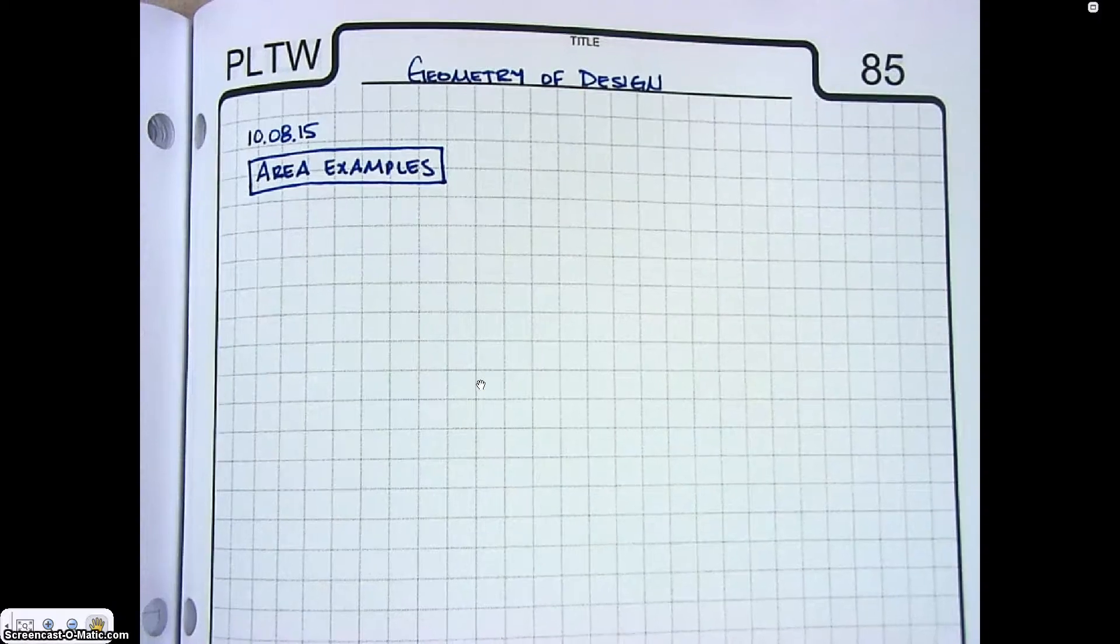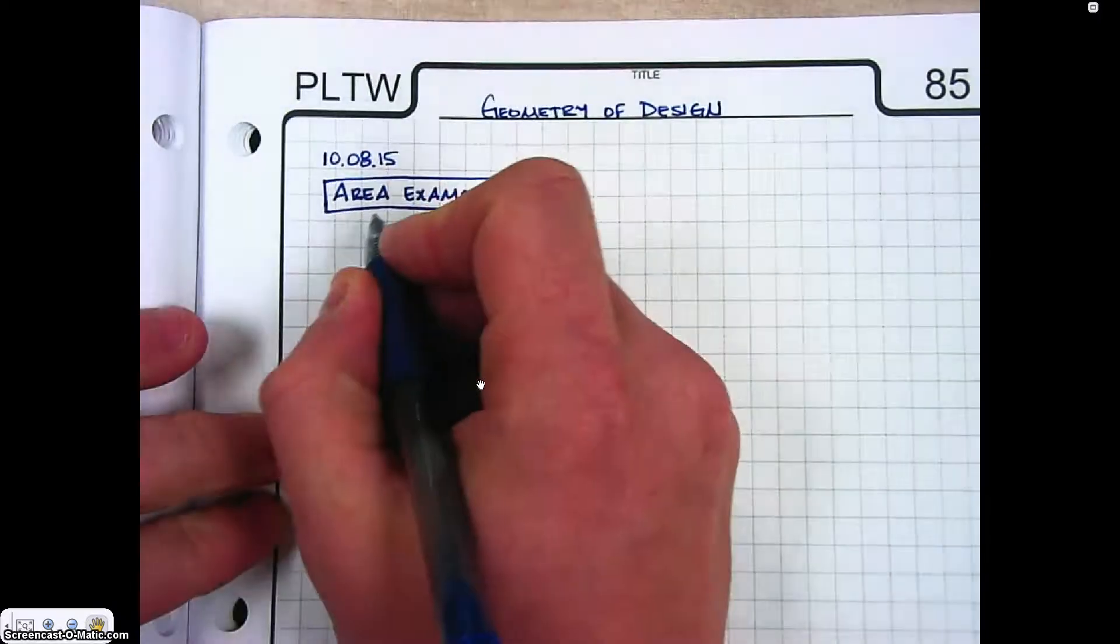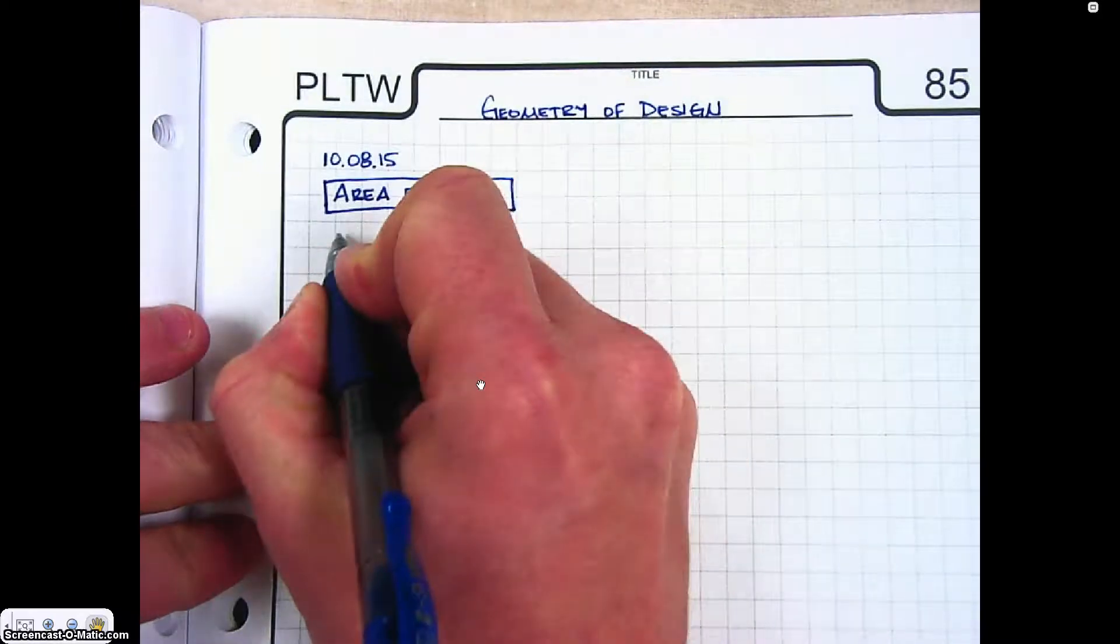Okay, we're going to go over some examples of how to calculate area. And so the first shape we're going to deal with is a rectangle.